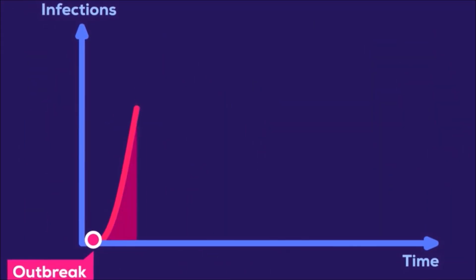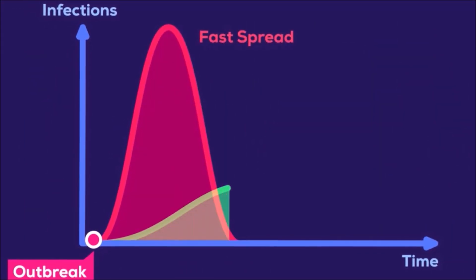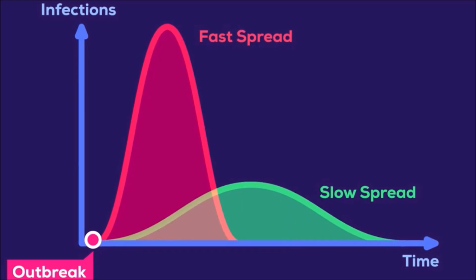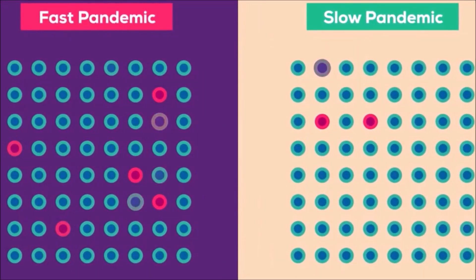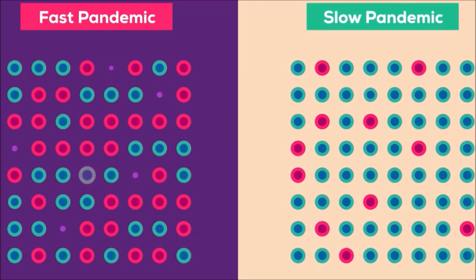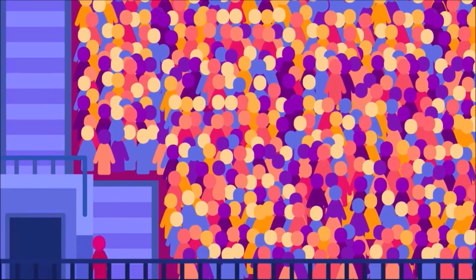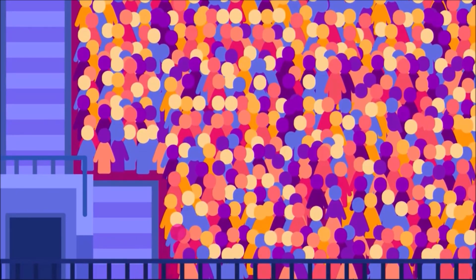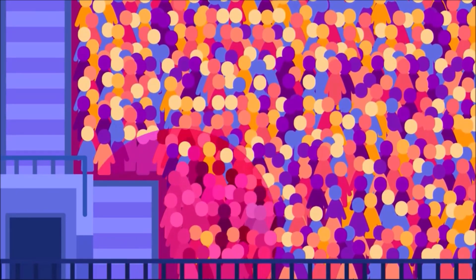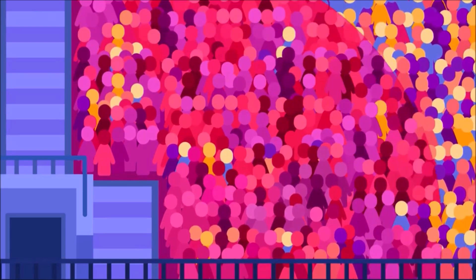There are two futures for a pandemic like corona, fast and slow. Which future we will see depends on how we all react to it in the early days of the outbreak. A fast pandemic will be horrible and cost many lives. A slow pandemic will not be remembered by the history books. The worst case scenario for a fast pandemic begins with a very rapid rate of infection because there are no countermeasures in place to slow it down.